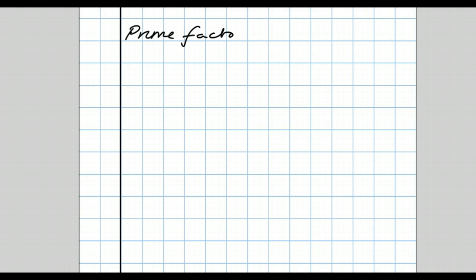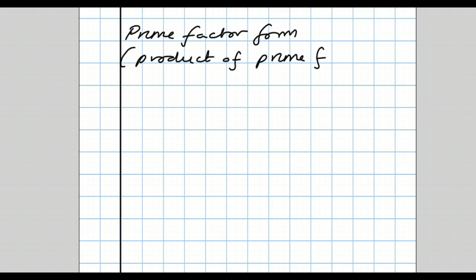Now let's extend this to prime factor form. Sometimes you might see the question use this phrasing: product of prime factors. I'll just remind you how you do it. Here are the first few prime numbers: 2, 3, 5, 7, 11, and so on. Remember, prime numbers can only be divided by themselves and 1.